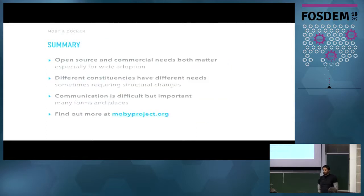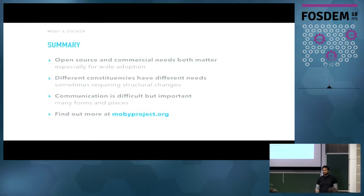To summarize: open source and commercial needs both matter if you want widespread usage, lots of contributors, and lots of users. Both the pure open source work and the commercial products that come out of that matter. Those different constituencies will have different needs, and sometimes satisfying all those needs will involve structural changes to the way you work on the project — allowing people the space to get what they need without stepping on each other's toes. Communication is difficult but really, really important, and you need to allow for that communication in lots of different places. If you're interested in finding out more about the Moby Project, go to MobyProject.org.